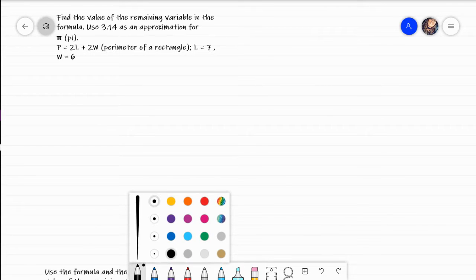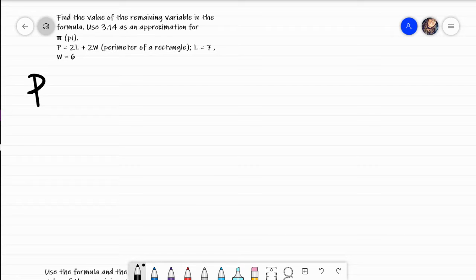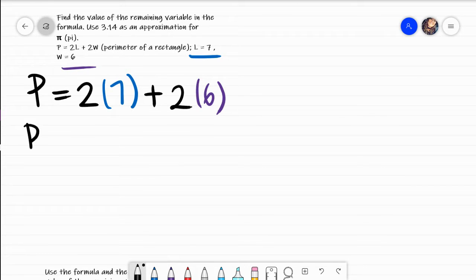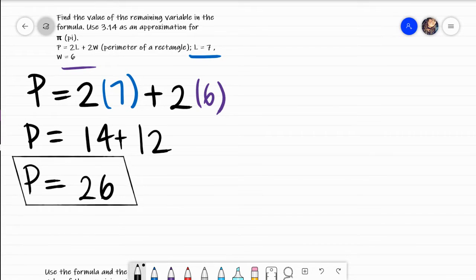Writing this formula, what I know is that I don't know my P, which is my perimeter. I do know my length is 7, and my width is 6. So I would get P equals 2 times 7 is 14, signs are the same so it's positive, and then 2 times 6 is 12, signs are the same so it's positive. The perimeter of this rectangle, 14 plus 12 would be 26. And that would be my final answer.